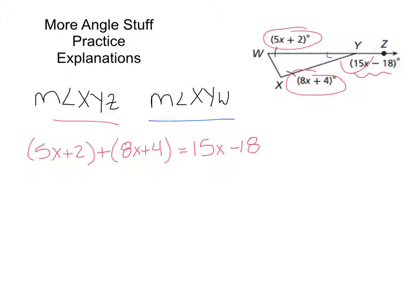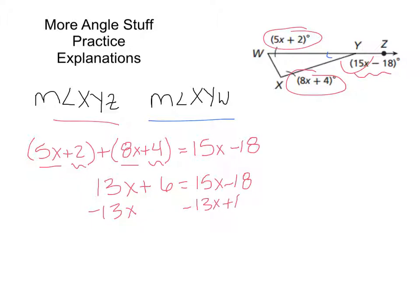Now it's just a matter of using a little bit of algebra. First thing I'm going to do is combine like terms. We're going to have 13x plus 6 equals 15x minus 18. Subtract 13x from both sides and add 18 to both sides. Then I end up with 24 equals 2x, divide both sides by 2, and we get x equals 12.